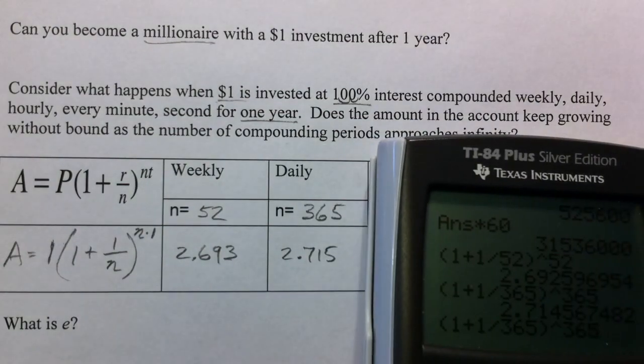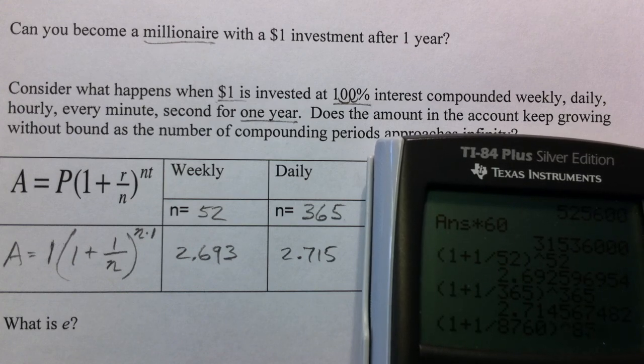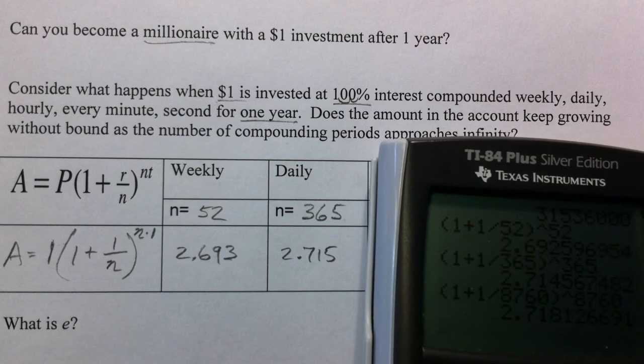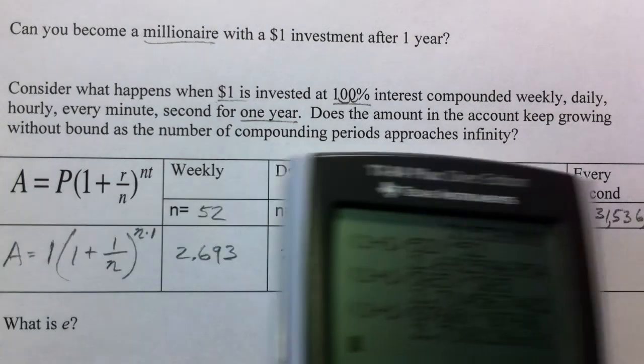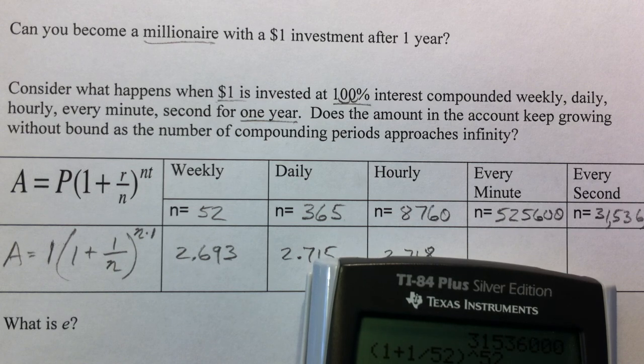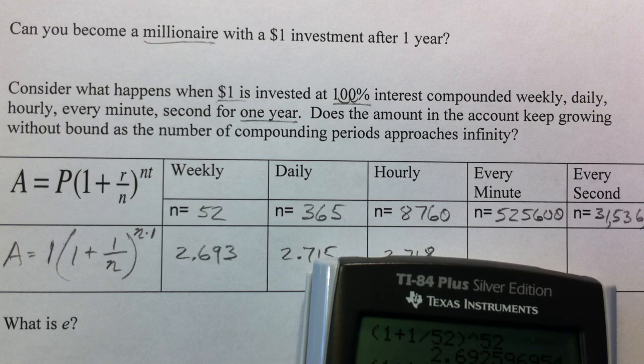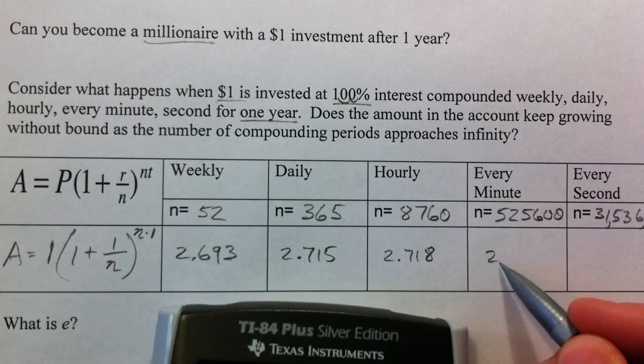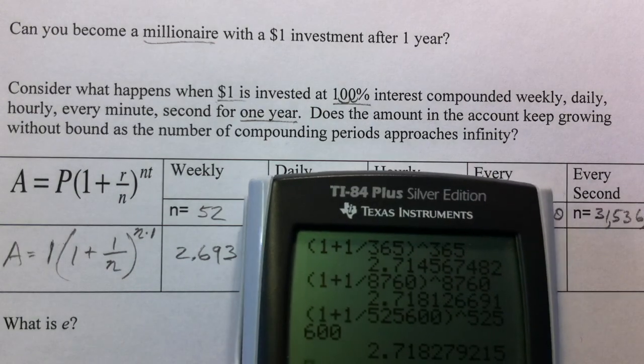Now, 8,760. Divide by 8,760. Raise to the 8,760th power. 2.718. 525,600 minutes. 2.718 again. And so it looks as though we're getting a cap here.